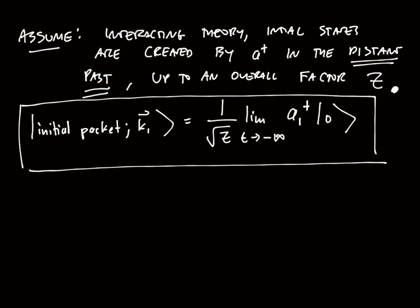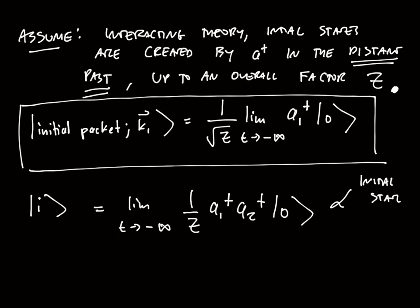So what are we interested in? Recall we're looking at 2 to 2 scattering. That means what I really want is my initial state to be an initial state of two particles. In other words, it's going to be limit as t goes to minus infinity, acting with two of these guys on the vacuum. So let me call them a₁ dagger and a₂ dagger on 0. This is my initial state of two particles.